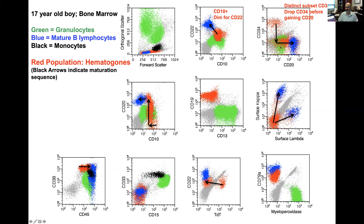For CD34 versus CD20 — these four markers, CD22, CD10, CD34, and CD20, will usually tell you that something is a hematogone. Hematogones start as a distinct subset of CD34-positive cells. Then, as if they abruptly drop it one day, they will lose CD34 expression — and only after dropping CD34 do they eventually gain CD20 and become mature B cells. So there is a distinct CD34-positive subset, and then they drop CD34 before they gain CD20, meaning there is no significant population co-expressing CD34 and CD20. CD34 is the immature marker; CD20 is the mature B cell marker.